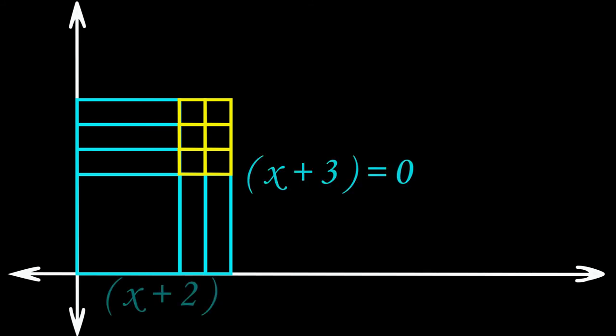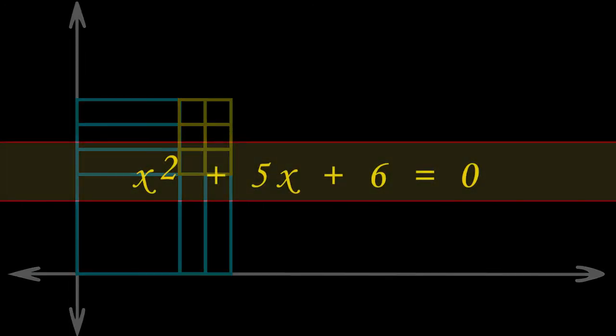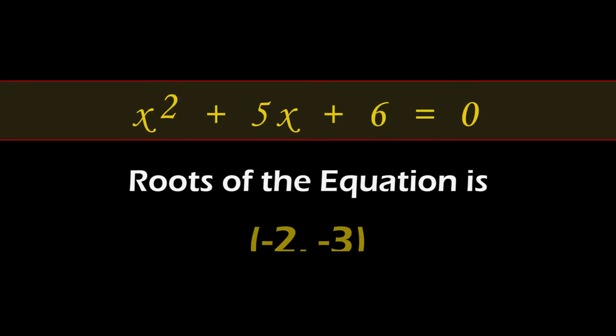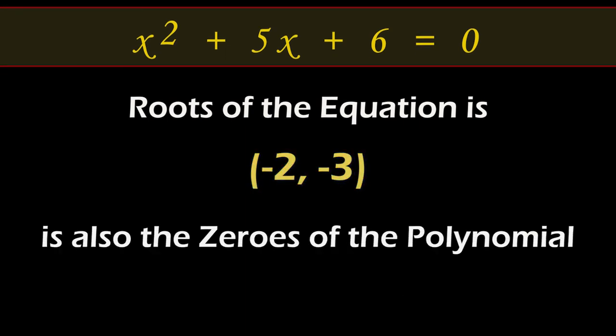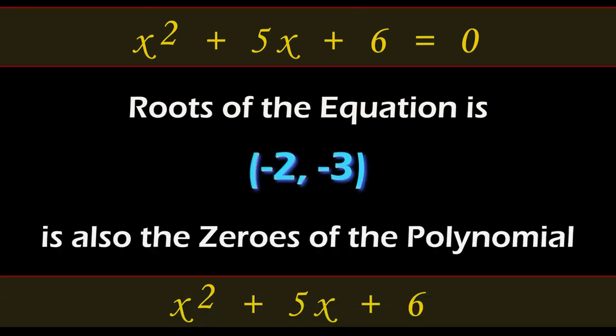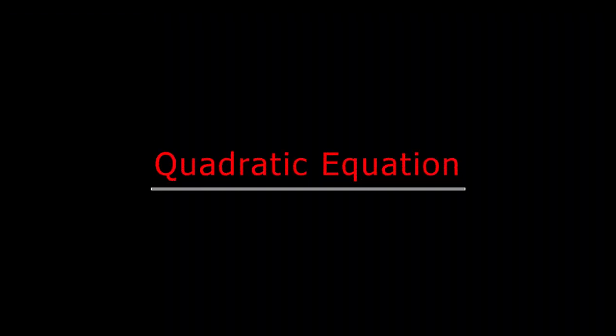We can make the rectangle zero either by making the length x plus 3 equal to 0 — squeezing the rectangle towards its length so it disappears — or by making the breadth x plus 2 equal to 0 and squeezing towards its breadth. So the roots of x squared plus 5x plus 6 equal to 0 are minus 2 and minus 3, which are also the zeros of the polynomial x squared plus 5x plus 6. Students, hope you have got a fair idea about quadratic equations.